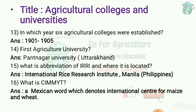What is the abbreviation of IRRI and where is it located? IRRI stands for International Rice Research Institute, located at Manila, Philippines. What is CIMMYT? It is a Mexican word denoting the International Centre for Maize and Wheat Development, located in Mexico.